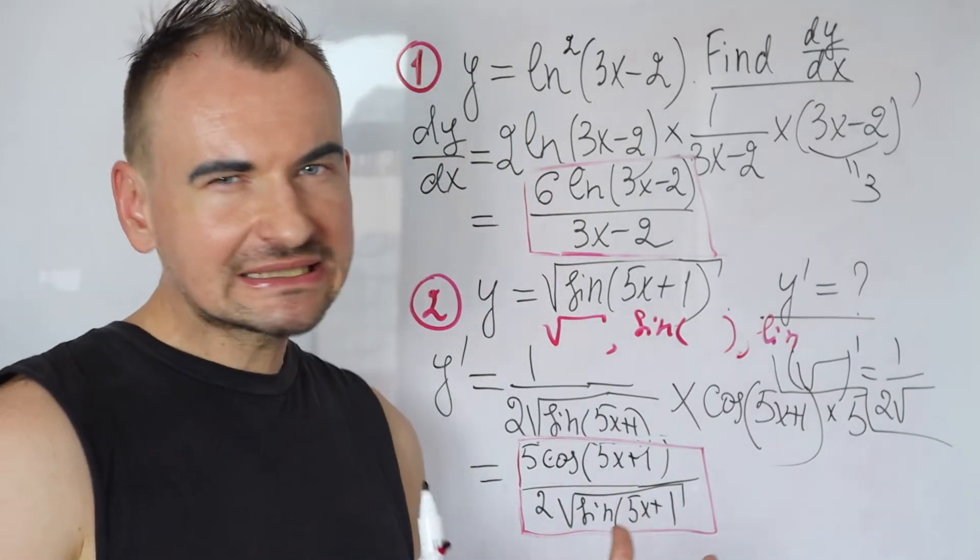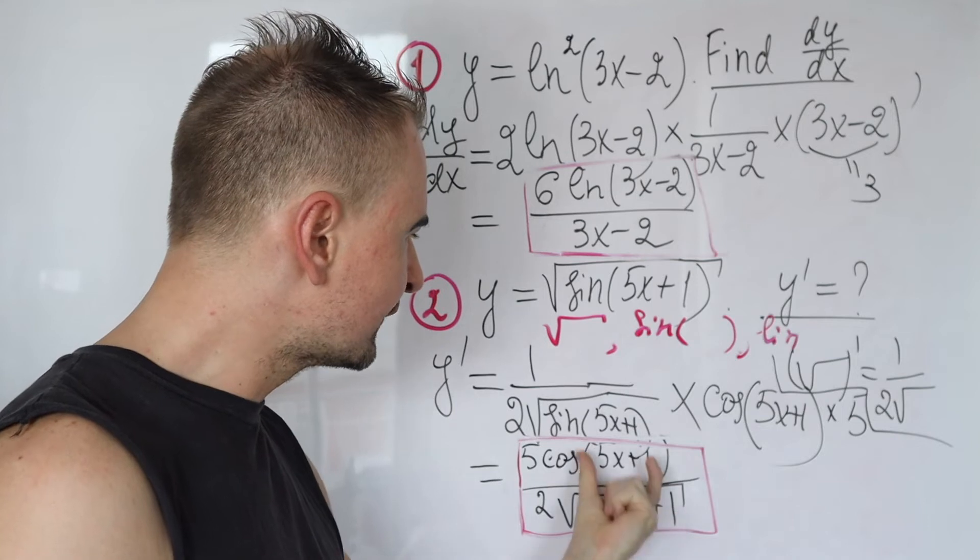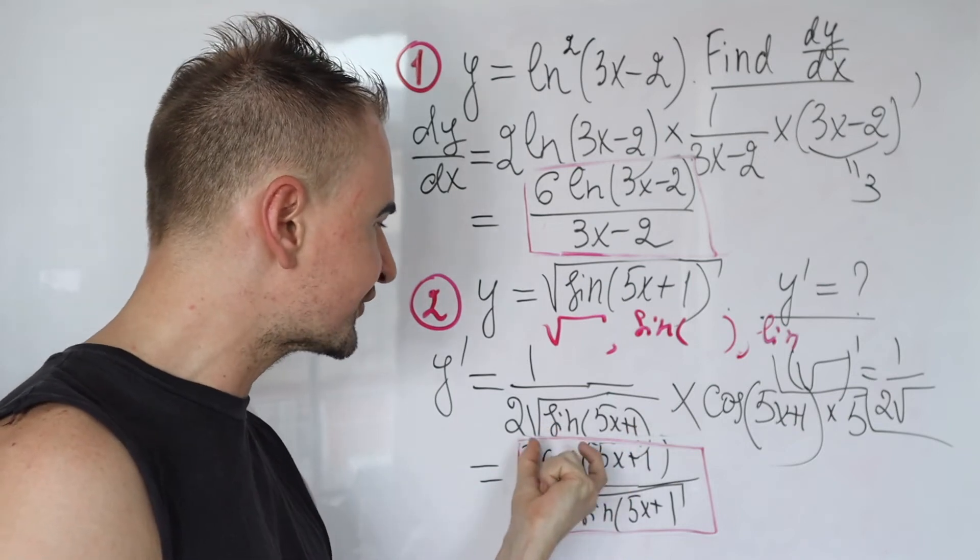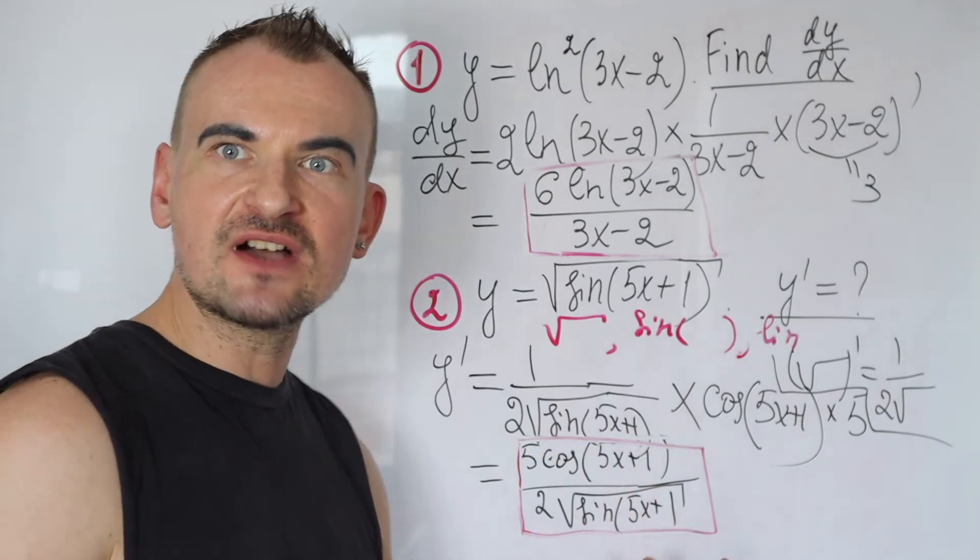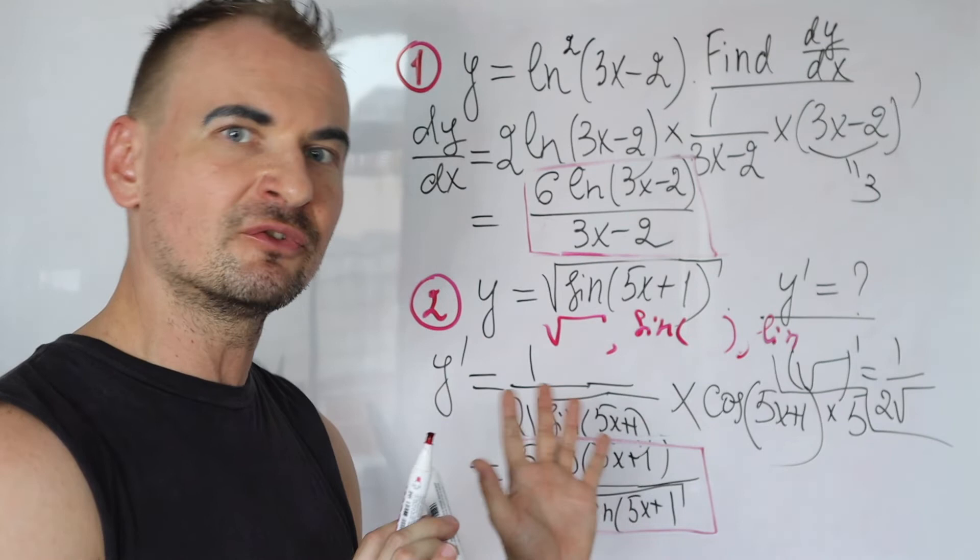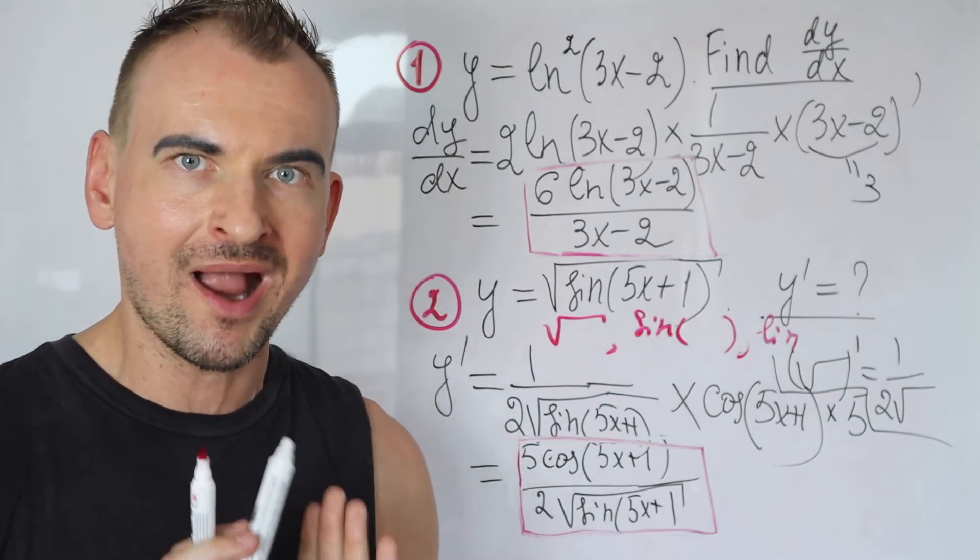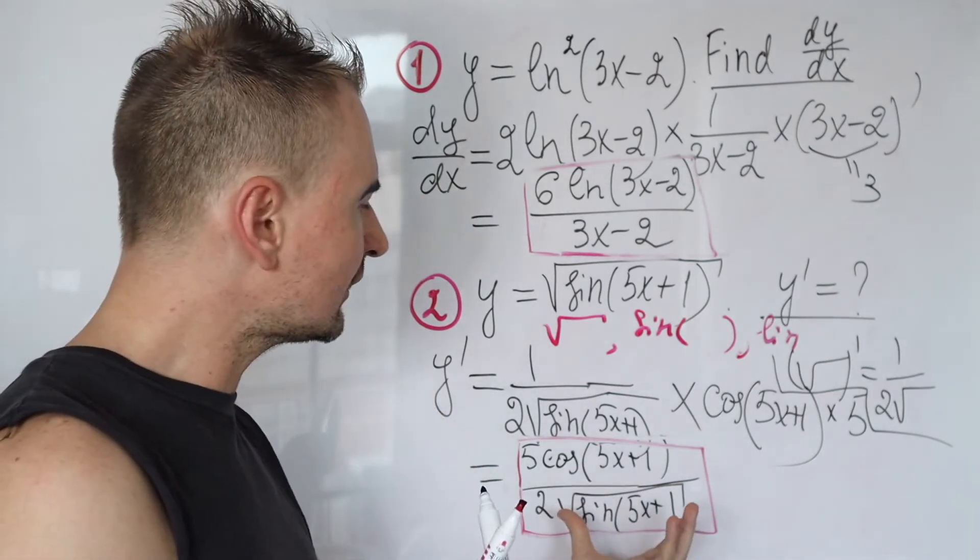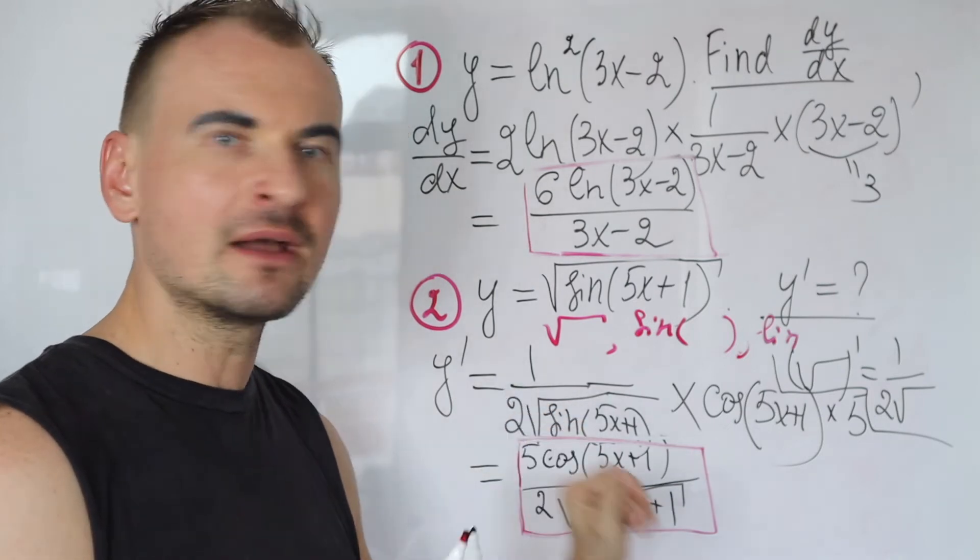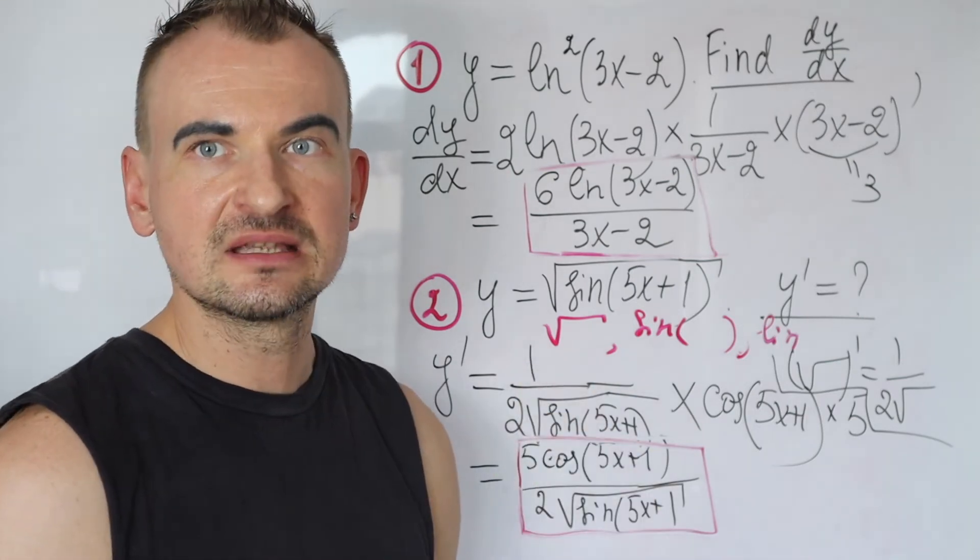Again, one little tip, one little bonus tip. Do not get confused, so this is 5x plus 1 argument that belongs to cosine, same 5x plus 1 argument that belongs to sine on bottom. So it might be kind of tempting to erase them, to cancel them. No way, you can't, you cannot. This is different, this is different argument, so they cannot be cancelled with each other. So this is your result for this function.